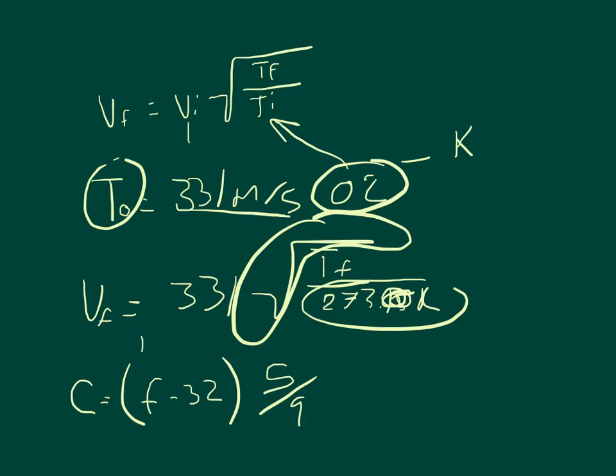So if we plug 101 in for the Fahrenheit, 101 minus 32 times 5 ninths is equal to approximately 38.333. That's in degrees Celsius,